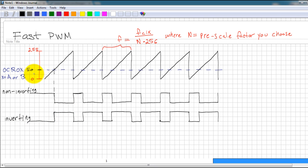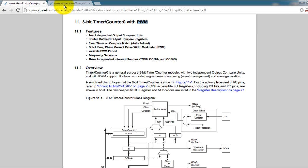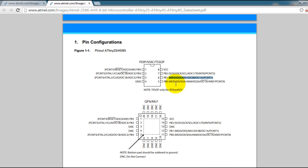That is how you can control the duty cycle for your wave by controlling the value between your minimum and your maximum count. The way you control the frequency is you can select the prescale value. So your frequency for your PWM is equal to the frequency of the clock divided by n, which is your prescale factor, times 256. We will be using an inverting PWM for our PB1 pin, which is OC0B, and we will be using a non-inverting for our OC0A pin.